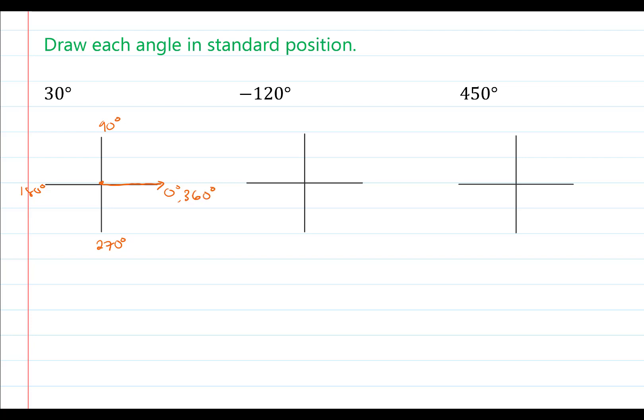Now that I know this, I can tell you that the 30-degree angle will be in quadrant one with a counterclockwise rotation. It is important to identify the rotation with that curved arrow.